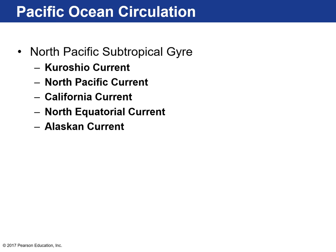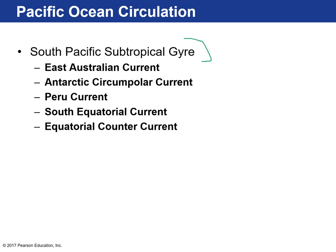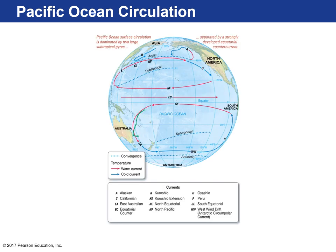In the Pacific Ocean circulation, the North Pacific subtropical gyre is bounded by the Kuroshio (Japanese) western boundary current, the North Pacific California eastern boundary current, the North Equatorial Current, and the Alaskan Current. The South Pacific subtropical gyre features the East Australian Current — a western boundary current, the same one ridden in Finding Nemo because it's so fast — and the eastern boundary Peru Current.